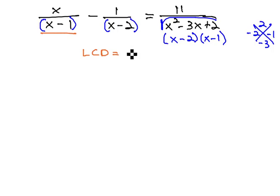Now, we can clearly see that one factor is x minus 1. Another factor is x minus 2, and there's no need to repeat the x minus 2 or the x minus 1, so we have our denominator.